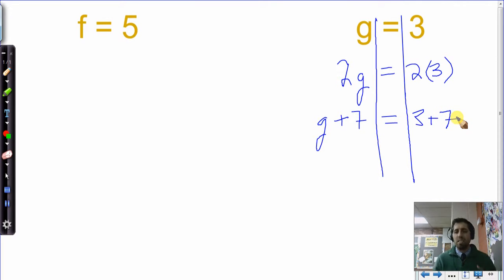Now, I want to drive home the point that with equations, we're allowed to kind of change them however we want, as long as we change them in the same way on both sides. So I'm allowed to double this. If g is equal to 3, then 2g should be equal to 2 times 3. And g plus 7 should be equal to 3 plus 7, and so on and so forth.